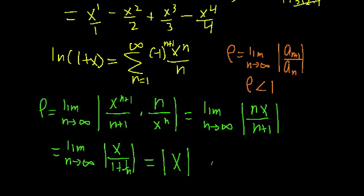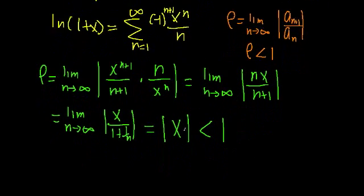This means our series will converge to ln of 1 plus x only when the absolute value of x is less than 1. This is different from what we found before — with the exponential case and the sine and cosine case, we found that the series converged for all values of x. Here, it's limited to when x is between negative 1 and 1.